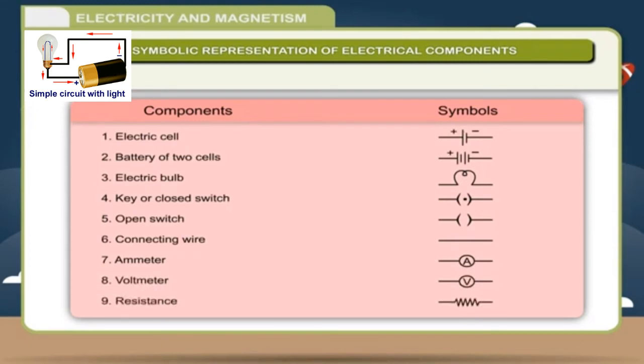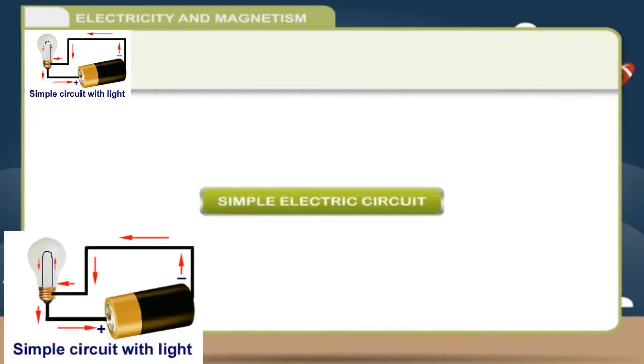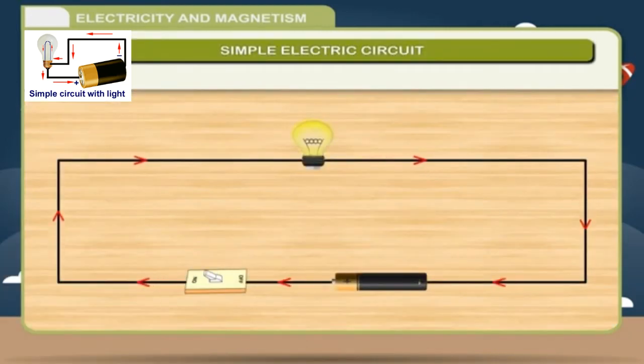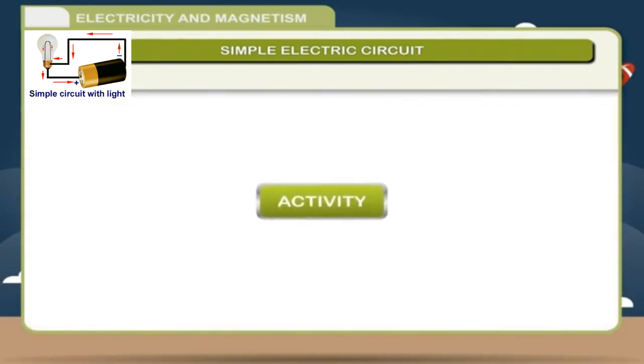Simple Electric Circuit. There is a complete pathway of flow of electric current. This pathway is known as electric circuit. If your electric circuit is complete, then the bulb will glow, otherwise not. A small activity performed to prove that current can flow only when there is a complete circuit.